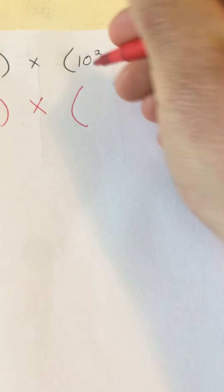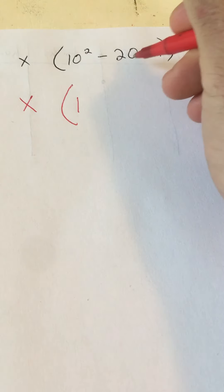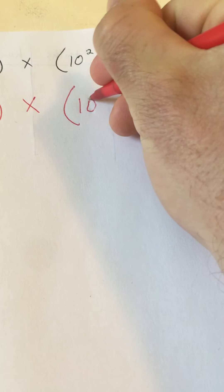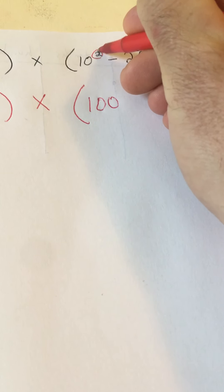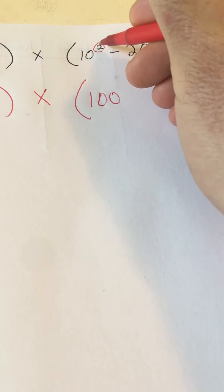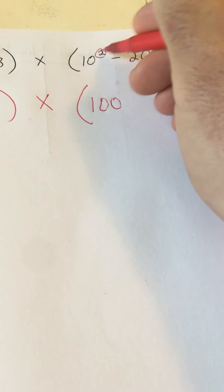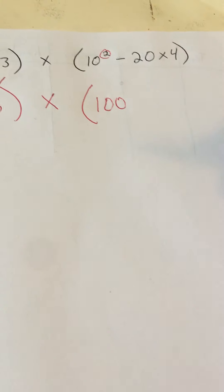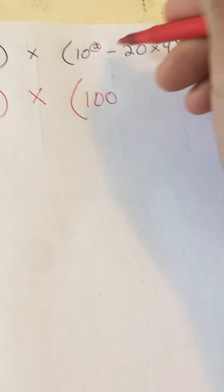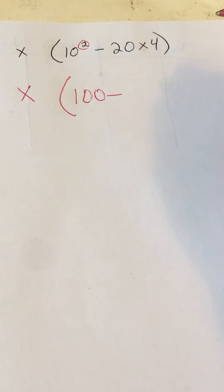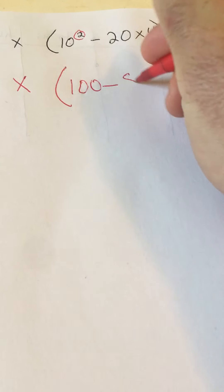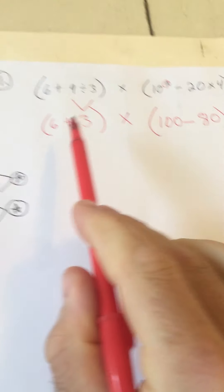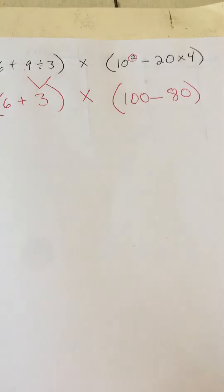Now we'll go over here. We have to do the exponents before we can do the multiplication or the subtraction. So 10 to the second power, or 10 squared, this exponent means that you're going to do the base number here, 10 times itself twice. It's not 10 times 2. It's not 20. It's 10 times 10, which is 100. So we're not going to do the subtraction yet, but we can do the 20 times 4 now, because next is going to be multiplication before we do the subtraction. So 20 times 4 is 80. So we have, in parentheses, 6 plus 3 times 100 minus 80.